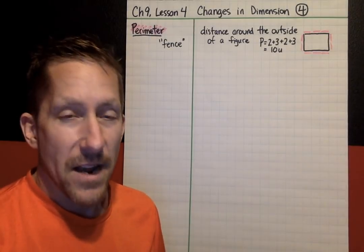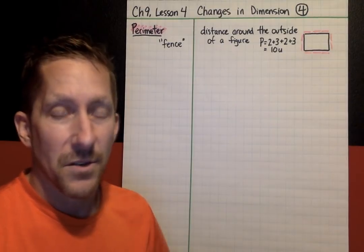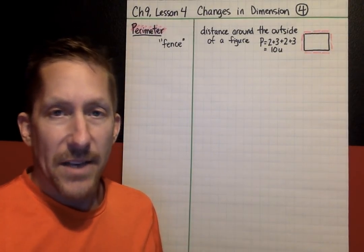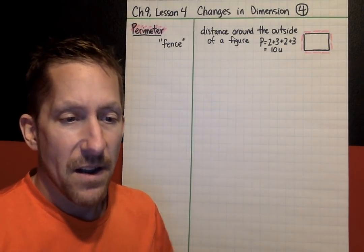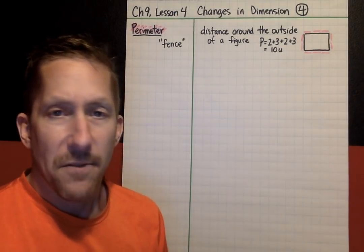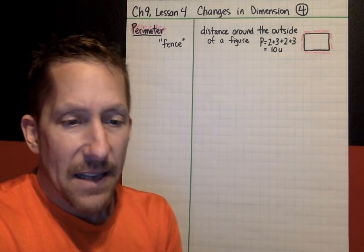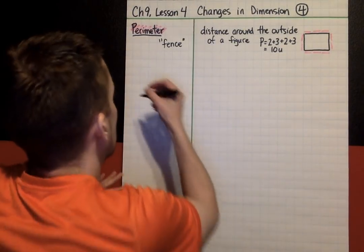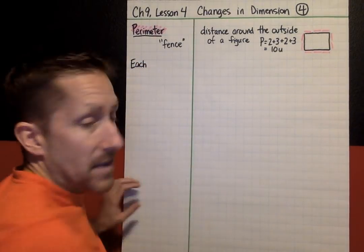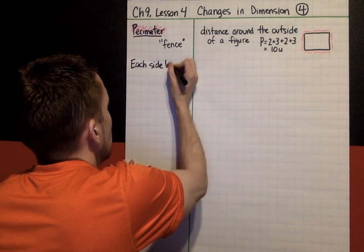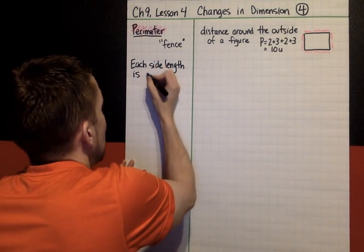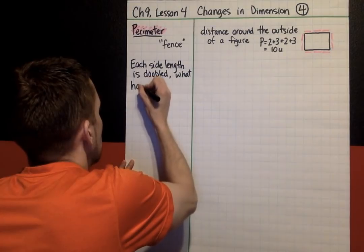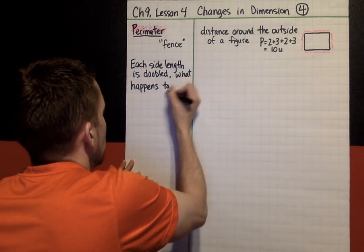Just plain units, not squares. Area is counting squares. Perimeter is straight distance, or straight units. Now that we know what perimeter is, we're going to look at what happens when you change the dimensions of a figure. What happens to the perimeter? The first example we're going to look at is: what if you have a figure and you take each side length and you double it? What is the change in perimeter?